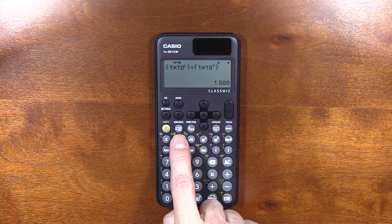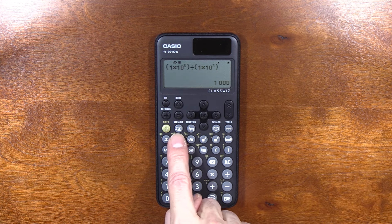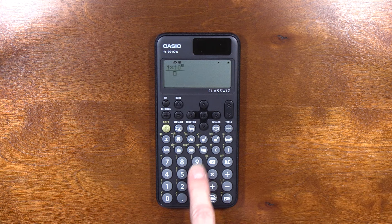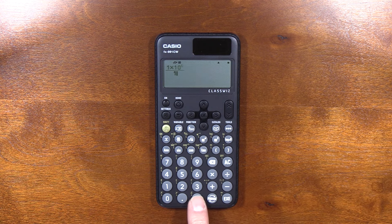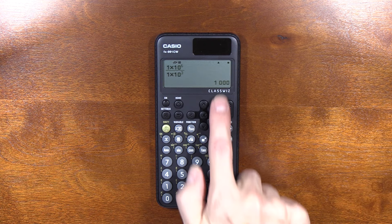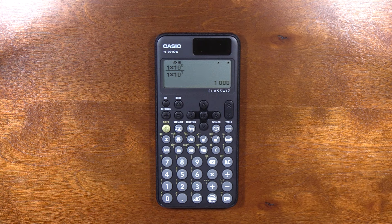The other option, if you're just doing something simple like this, is to use the fraction key. One times ten to the sixth, go down, one times ten to the third, enter. One thousand. That is an oops, in my opinion, with this new calculator, and it's something to watch out for.